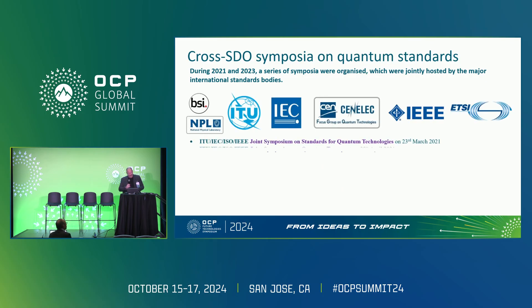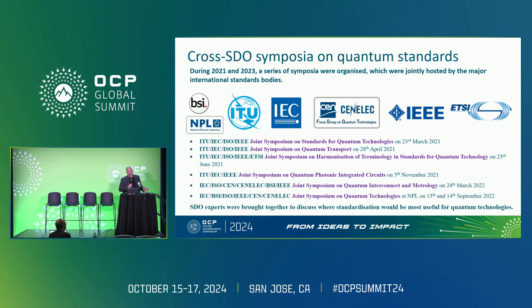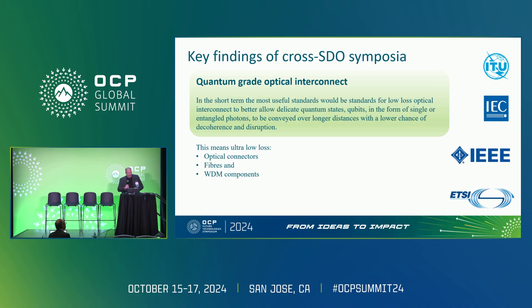Over the last few years, I organized a few what were called cross-standard symposia — little conferences, mostly remote during COVID — bringing together experts from the main standards bodies to look at quantum and see what needs to be standardized. A lot of useful information was garnered. One of the key pieces was optical interconnect — quantum-grade optical interconnect — which speaks to quantum networks, the most mature technology at the moment. QKD systems, for example, you can buy them.